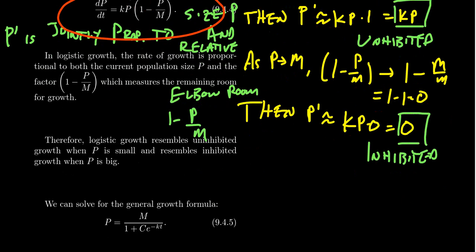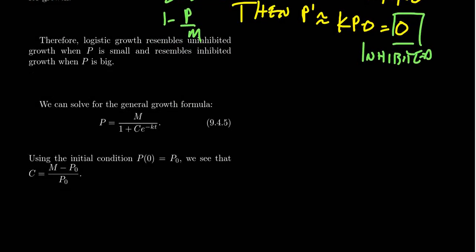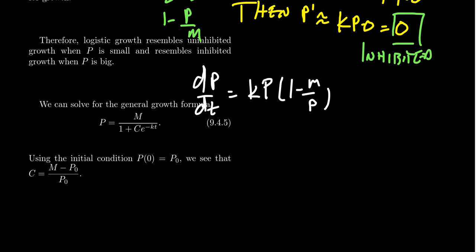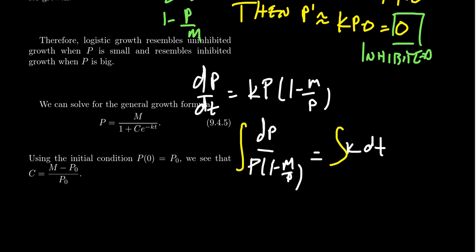Now how do we solve this differential equation? Just like inhibited growth, dp/dt equals kp times one minus p over m is a separable differential equation. We can separate the variables, getting dp over p times one minus p over m equals k dt. Integrating both sides: the right-hand side is straightforward — it gives kt plus a constant. The left-hand side takes more effort, because we have a rational expression that requires partial fraction decomposition.